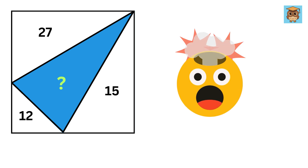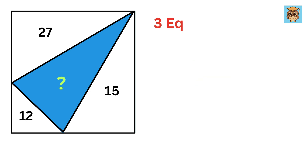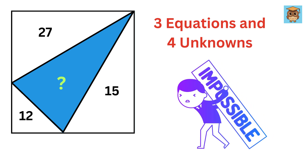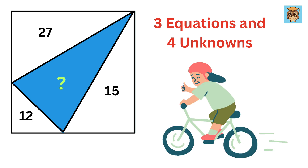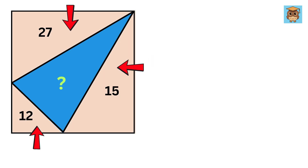This question is going to blow up your mind. You might find yourself stuck at a certain point where we deal with three equations and four unknowns — which we all know is impossible to solve. But then we will also see how we can come out of it. This will be an amazing adventure and lots of fun. We have a rectangle and we are given the areas of three right angle triangles.